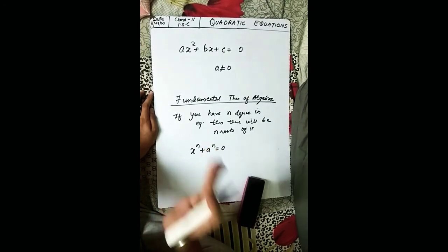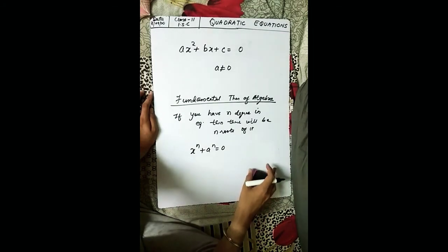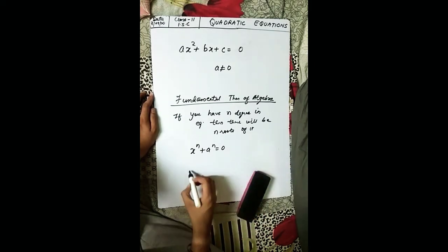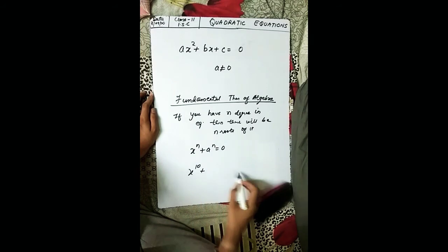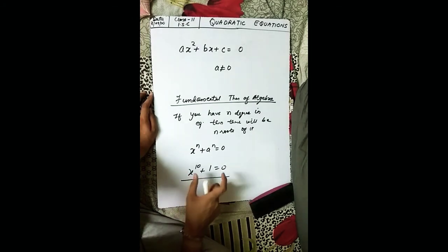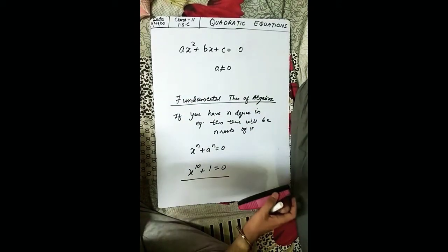Whatever is the highest power of the equation, that gives the number of roots. For example, if I write a cubic equation and ask how many roots you get, your answer should be 3. If I have an equation of degree 10, I will get 10 values of x. This is called the Fundamental Theorem of Algebra.